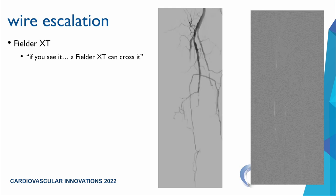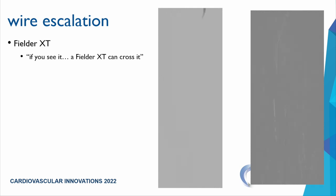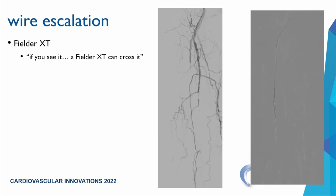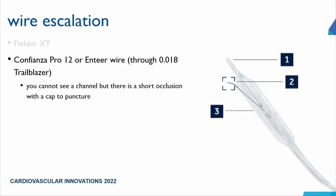My wire escalation starts with the workhorse wire. If I see a micro channel, I quickly drop a Fielder XT down it — what looks like a long total occlusion may have a micro channel that the Fielder XT flies through, making it straightforward. Rarely do I escalate to stiff heavy-tipped wires. For short CTOs where needed, I use a Confianza Pro 12 with 1 mm 45-degree tip or the Enteer wire — described as a micropuncture needle on a wire — to poke through a cap, not traverse a long path.